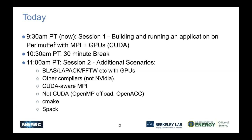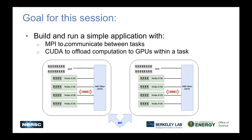In session two, we'll walk through a few additional scenarios, such as some of the math libraries, using other compilers rather than only NVIDIA, looking at CUDA-aware MPI, things that are not CUDA, and a few tips about using CMake or Spack when you're building. The goal for this first session is basically to build and run a simple application using MPI to communicate between tasks and CUDA to offload computation to GPUs within a task.